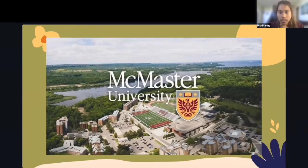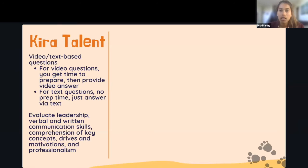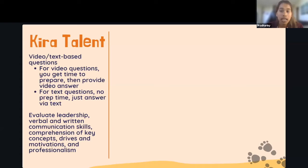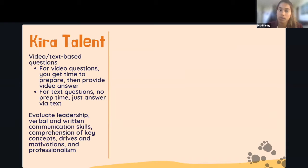Moving on to McMaster's application components: other than GPA, the only other component for interviews is CuraTalent. CuraTalent is an online interviewing platform intended to evaluate your leadership potential, verbal and written communication skills, comprehension of key concepts, and overall professionalism. The questions are randomly assigned and preparation and response time can vary widely. Preparation time is only given for video questions; for text questions, you'll begin typing immediately. The prep time is determined by McMaster — it could be 30 seconds or a few minutes — so you'll only know when you start.